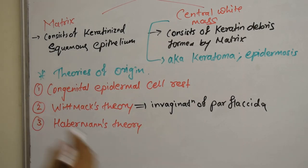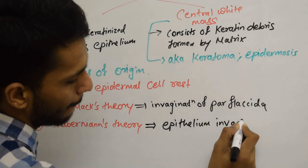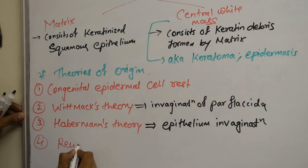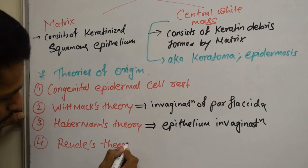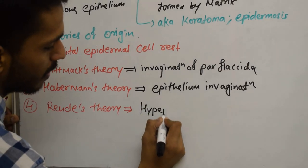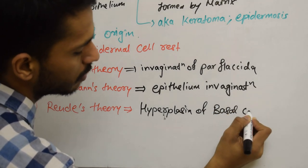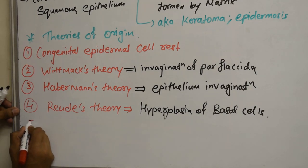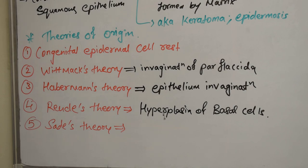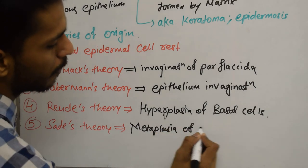Habermann's theory says Cholesteatoma occurs due to epithelium invagination. Then we have the fourth theory, Ruedi's theory, which says Cholesteatoma occurs due to hyperplasia of basal cells. Then the last theory is Sade's theory, which says that Cholesteatoma occurs due to metaplasia of middle ear mucosa.